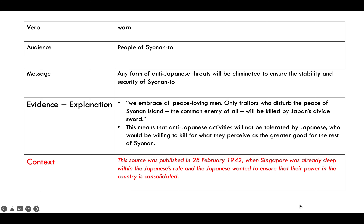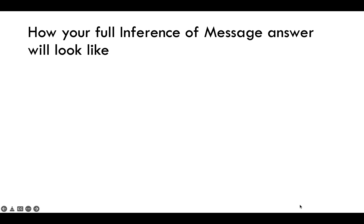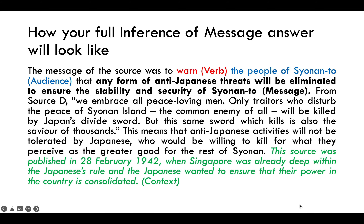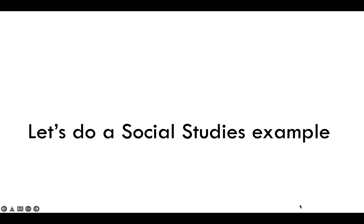Now I've broken down my answer into verb, audience, message, evidence, explanation, and context. This is how your answer will look as a paragraph. I've color-coded the acronym into the paragraph — this structure is meant to ensure that your answer flows.